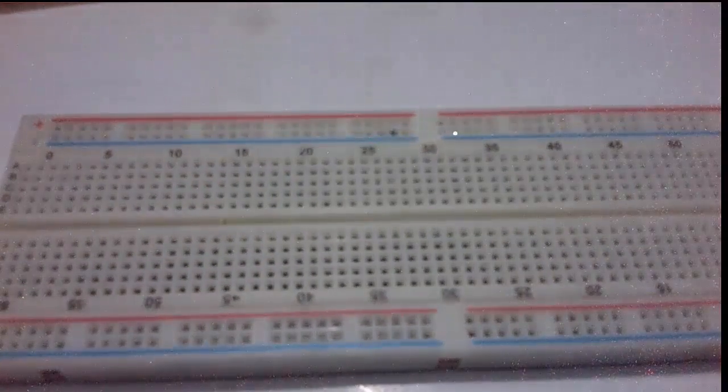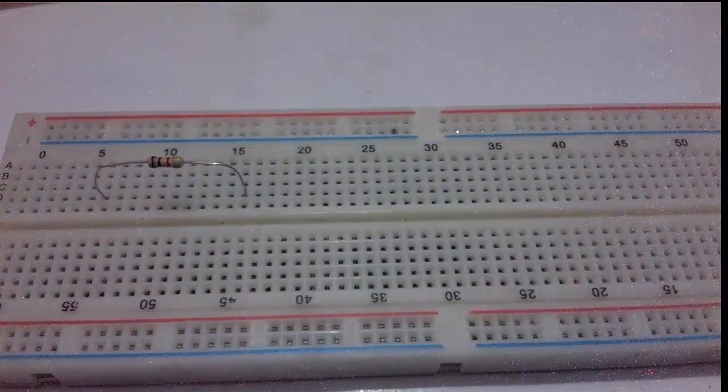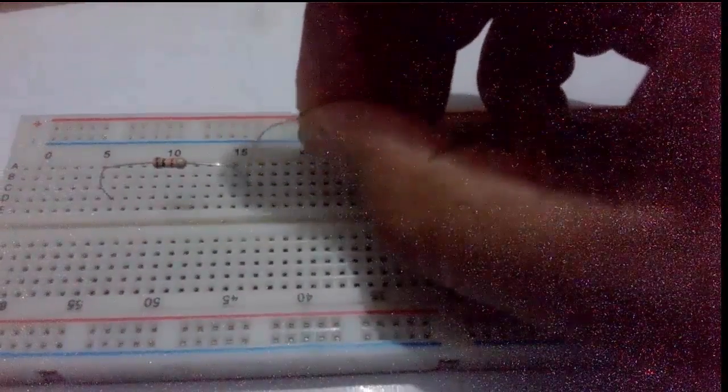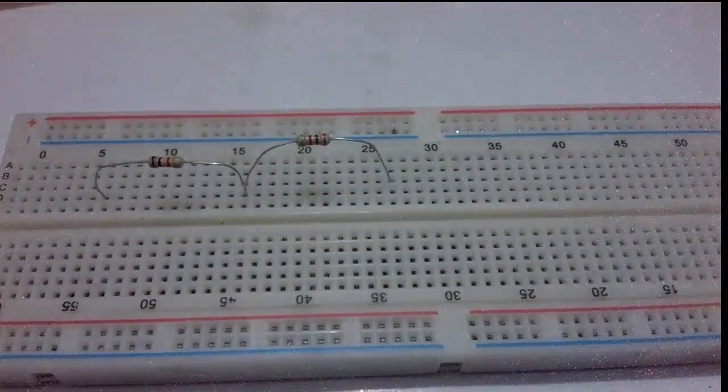In this tutorial, I will try to prove Kirchhoff's voltage law, also known as KVL. The Kirchhoff voltage law states that the sum of all the voltage around a loop is equal to 0. It means the source voltage is equal to sum of each resistor voltage.